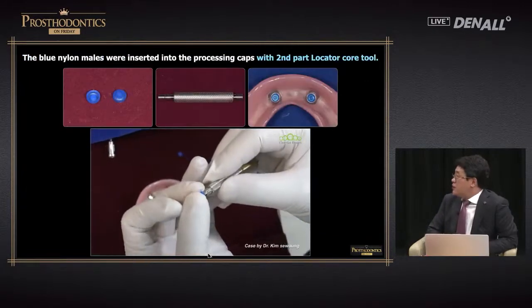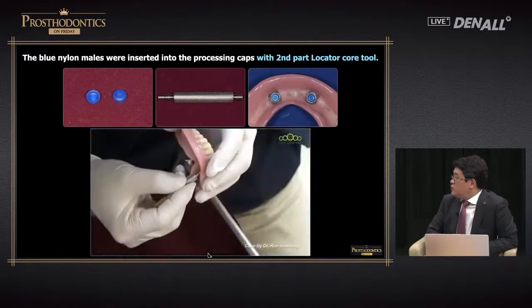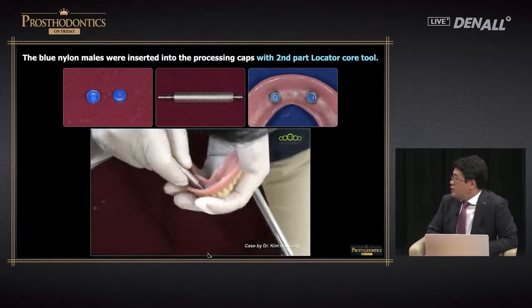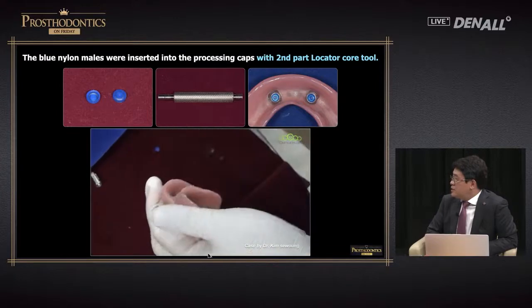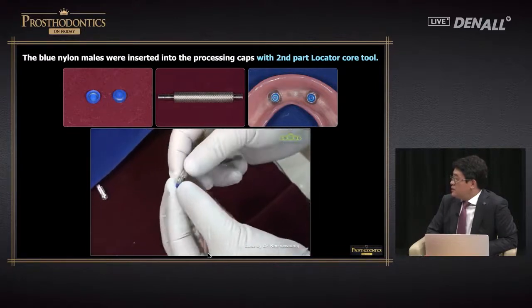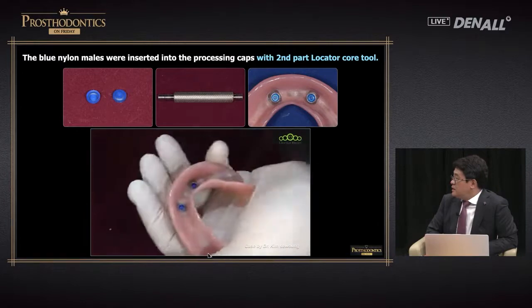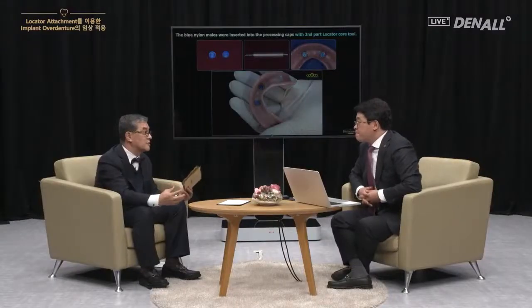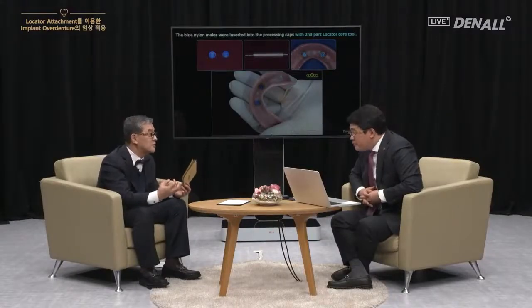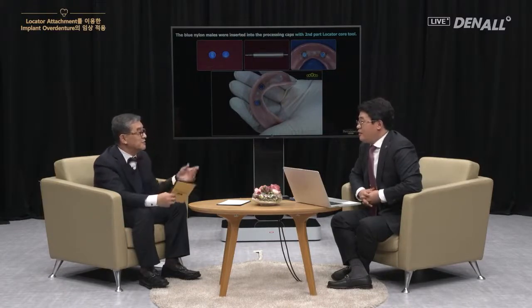The nylon mill used clinically is mostly blue. You can use the second tool to push it in, and the sound of a snap can be heard as it is positioned. In the beginning, the locator has a very strong retentive force — you cannot pull it out even if you wanted to in many cases.